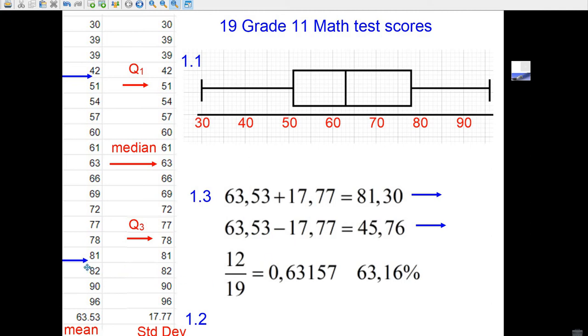Then you just count how many numbers fit between 81, a little bit bigger than 81, and 45.76 would fit in here. How many numbers is that? I count 1, 2, 3, 4, 5, 6, 7, 8, 9, 10, 11, 12. Out of 19, that's 63.16%.